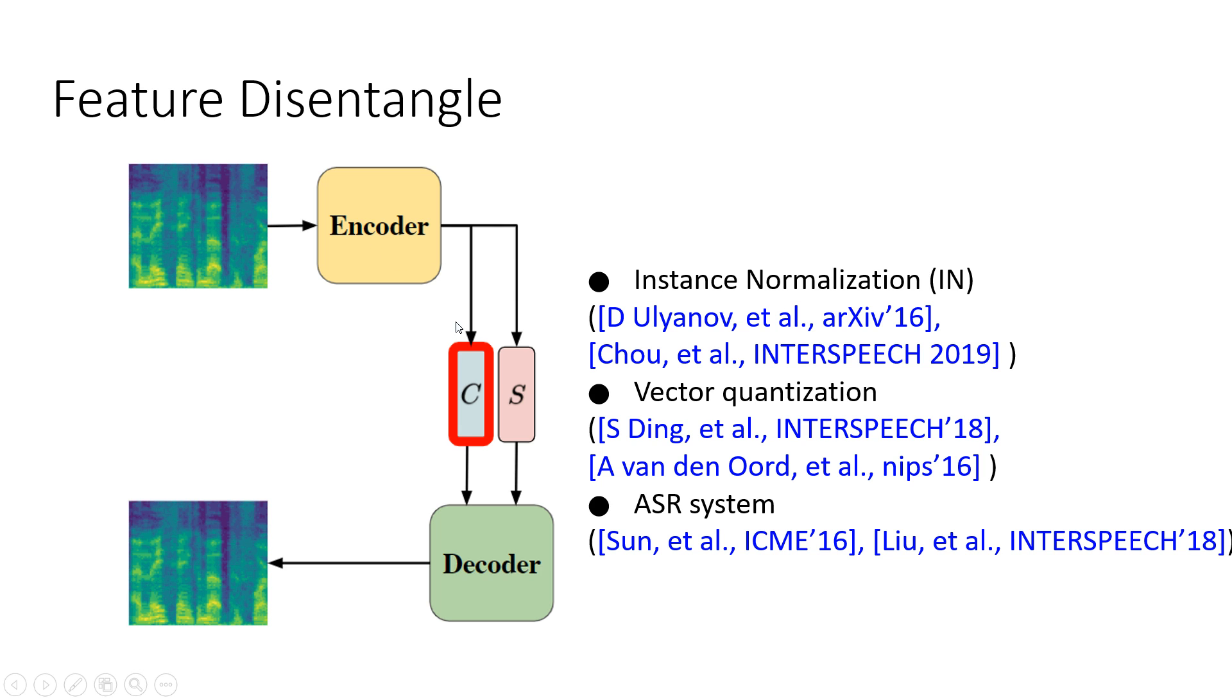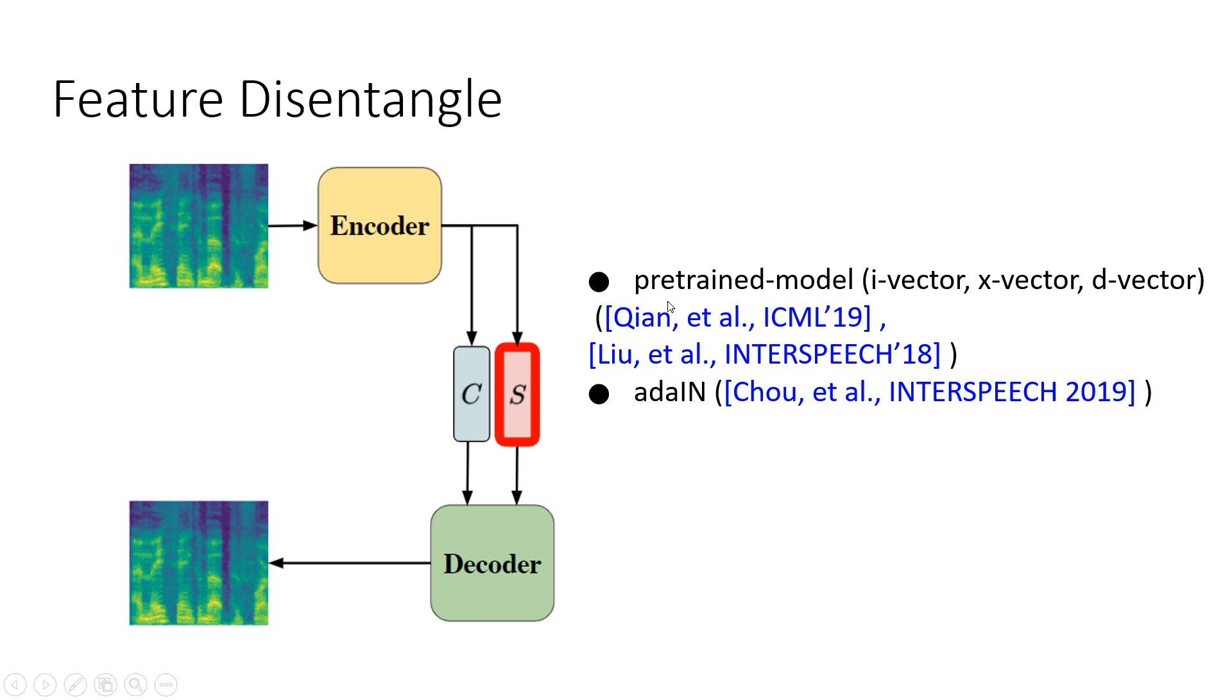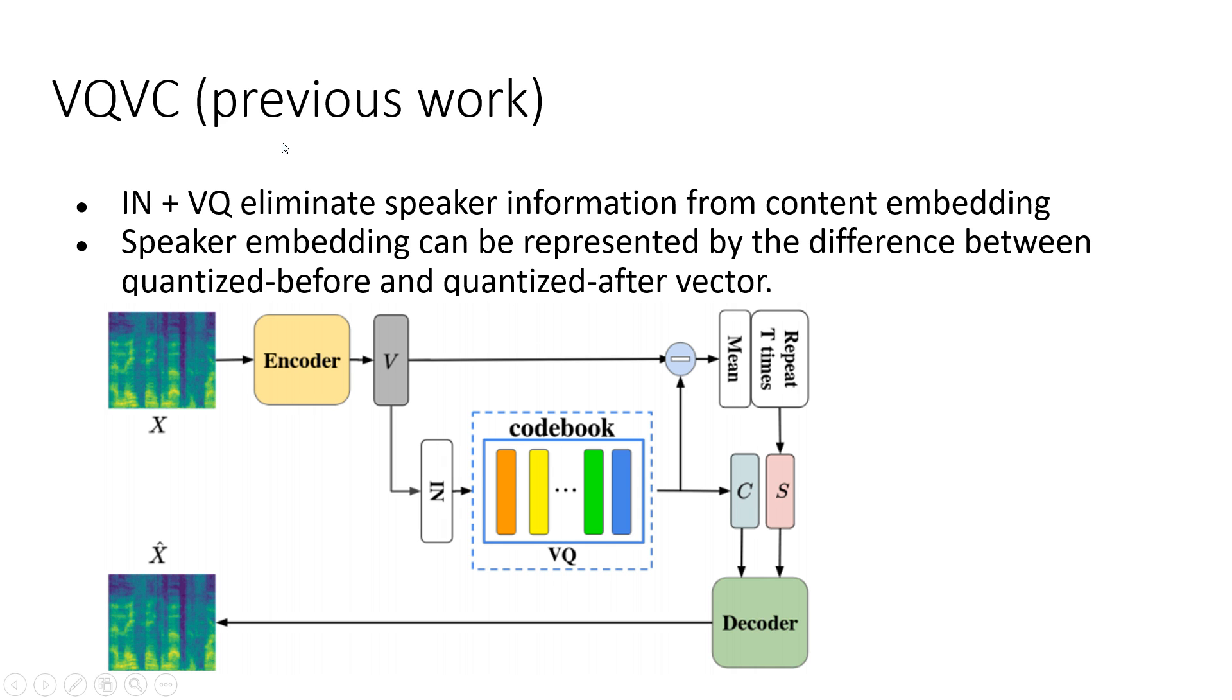There are various methods for content embedding. We can use instance normalization or vector quantization or pre-trained ASR systems. For speaker embedding we can use pre-trained speaker verification models like i-vector, x-vector, or d-vector, or we can use adaptive instance normalization which is first used in image style transfer problems.